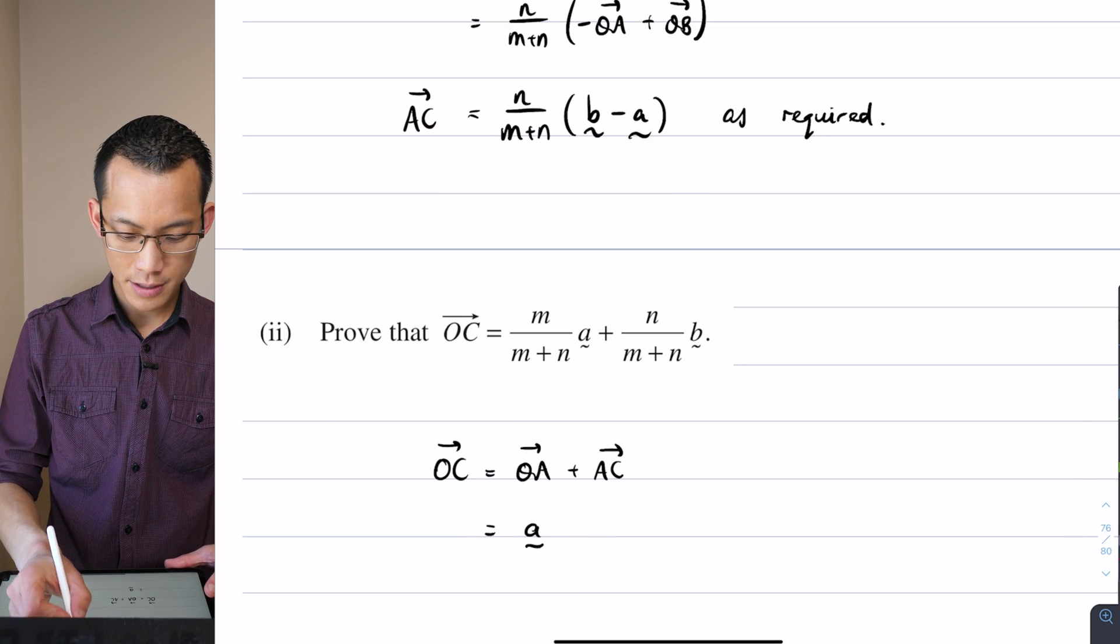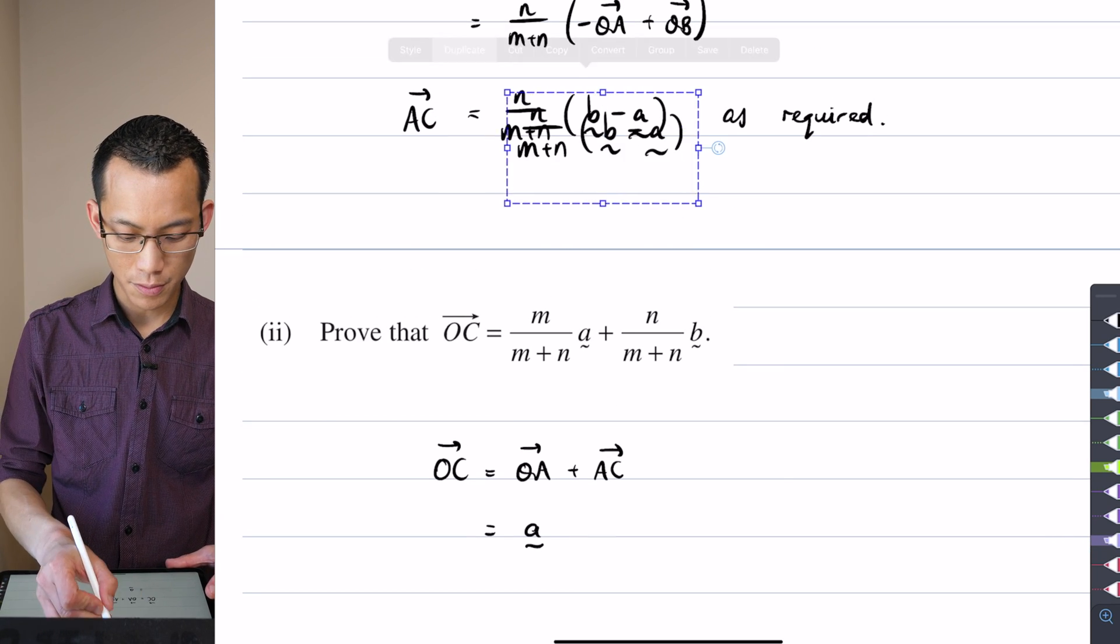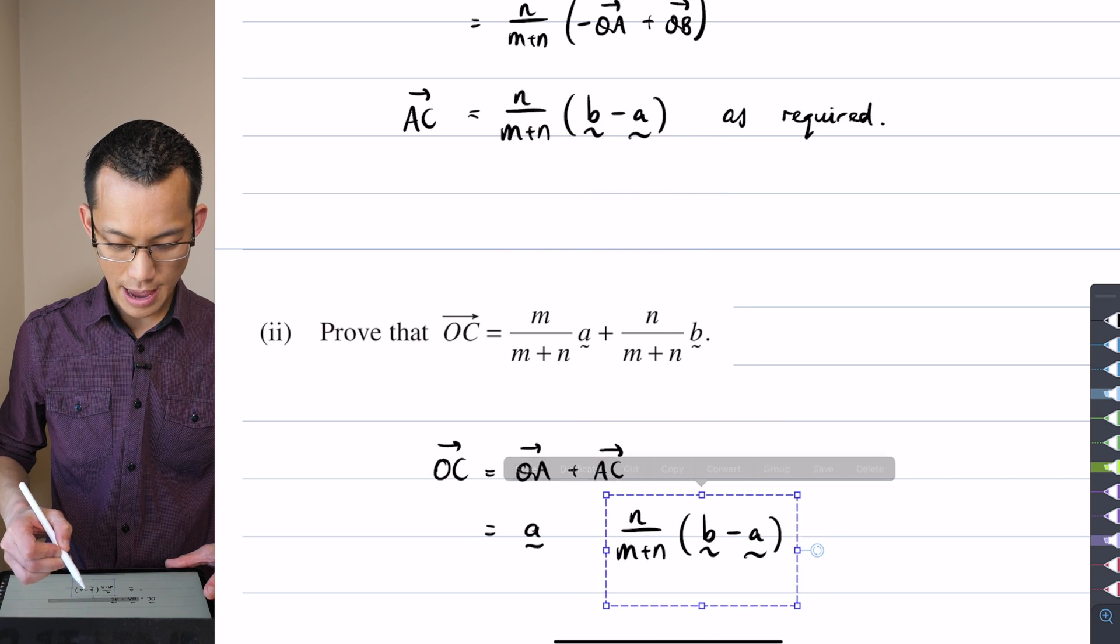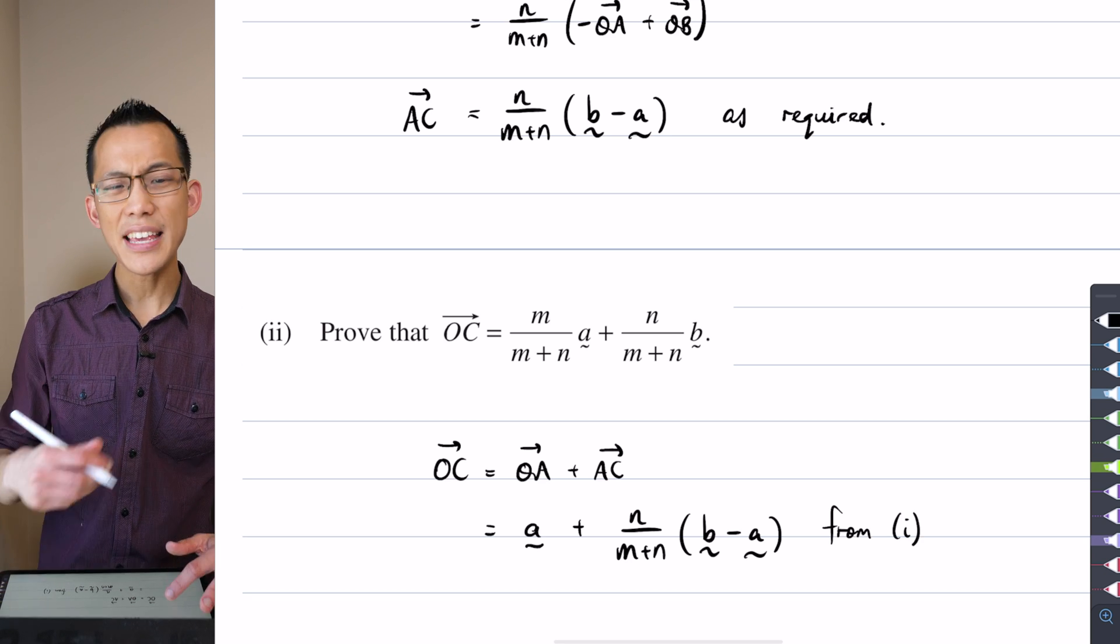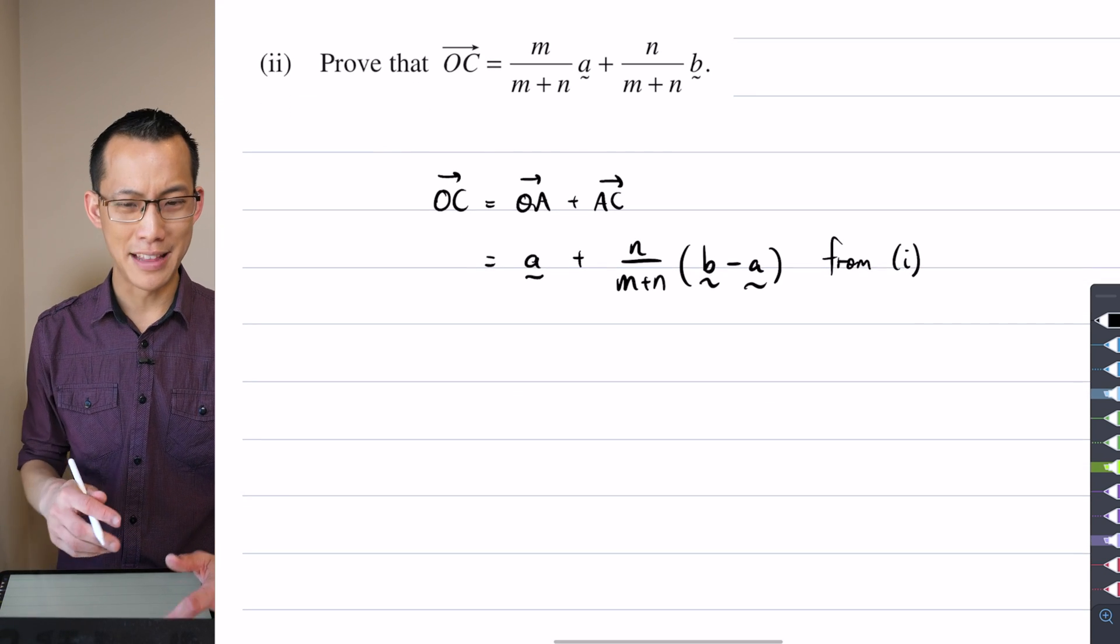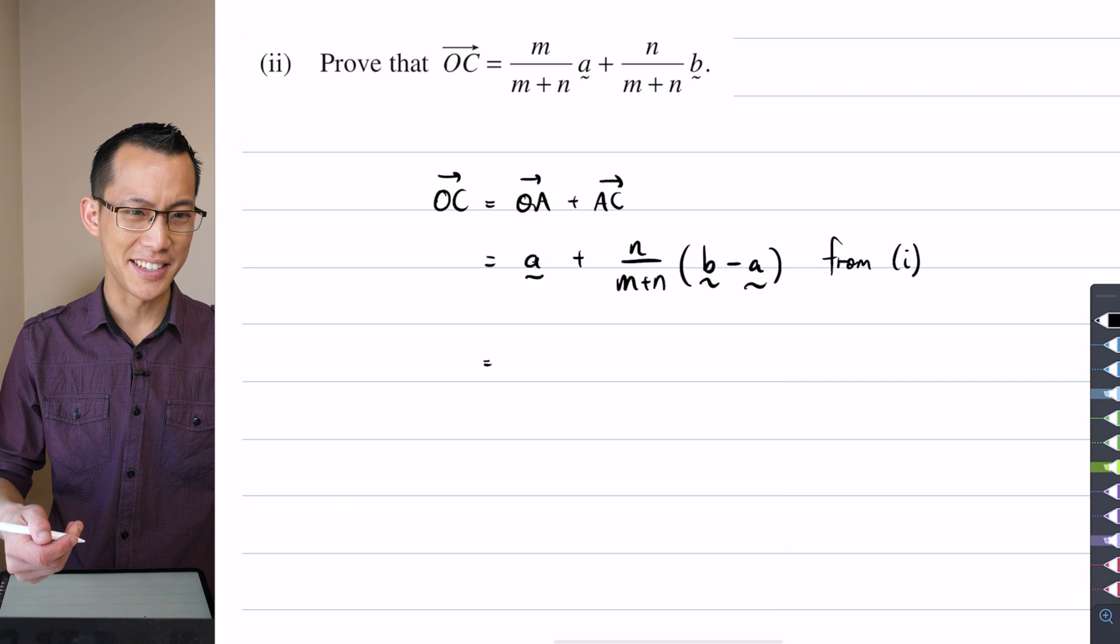And I should say that from part one. And then from here it's just a matter of expanding the brackets and slicing and dicing. I'll get them on the same m plus n denominator, which is ma plus na all over m plus n.